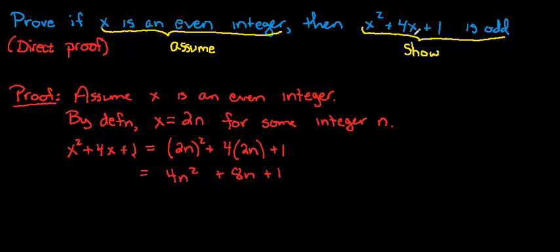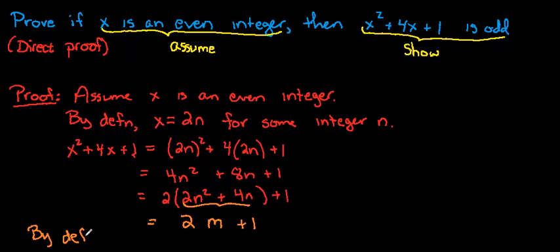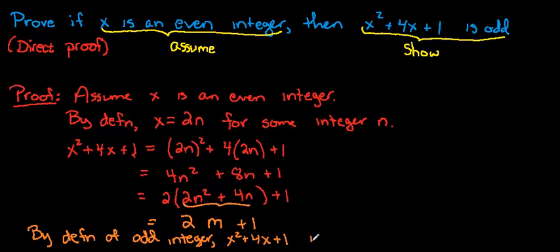What we're trying to show is that this expression is odd. Notice that we could factor out a 2 from the first two terms, leaving us with 2(2n squared plus 4n) plus 1. If we rename the expression in parentheses m, what we've now shown is that we have 2m plus 1. And that shows the claim — so we conclude by definition of odd integer that x squared plus 4x plus 1 is odd.